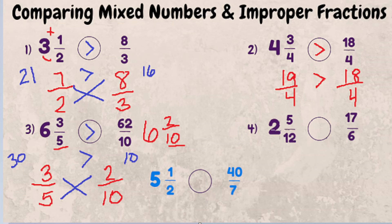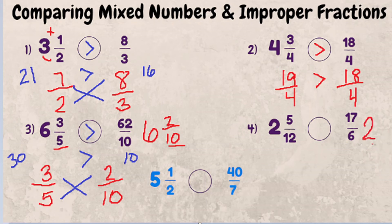Last one: two and five twelfths compared to 17 over six. We're going to convert 17 over six into a mixed number. Six goes into 17 two times — six times two is 12, and 17 minus 12 leaves five sixths remaining. So we have two and five twelfths versus two and five sixths.